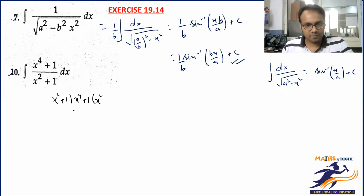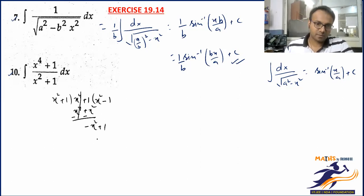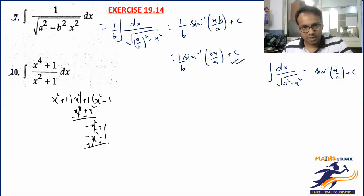The quotient will be x². That becomes x⁴ + x². When you subtract, sign changes. You bring down the constants. This is the integral of (x⁴ + 1)/(x² + 1) with respect to dx.